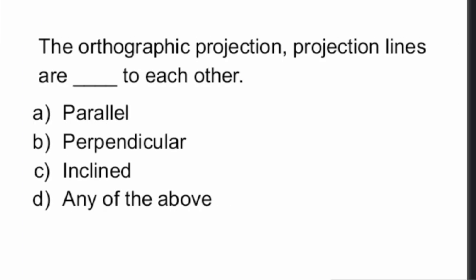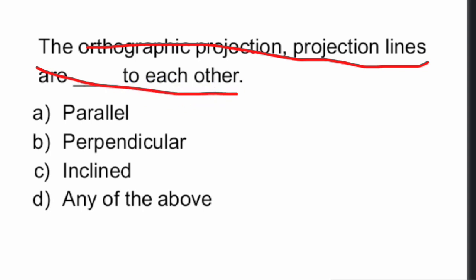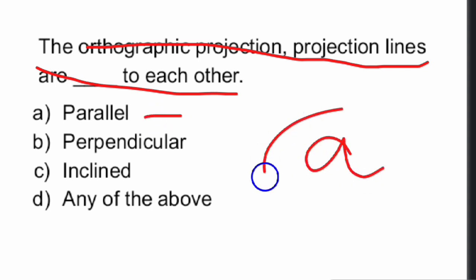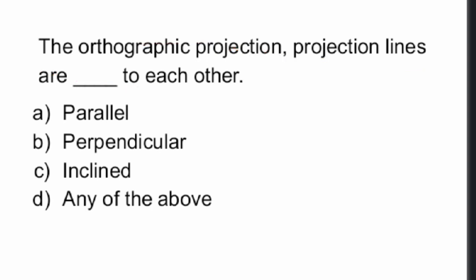Next question: in orthographic projection, the projection lines are parallel to each other. Option A — the lines are parallel to each other in orthographic projection.